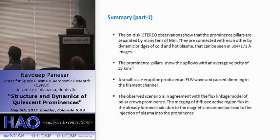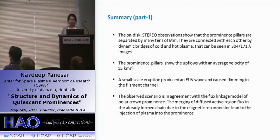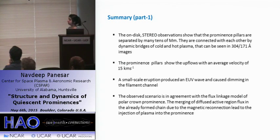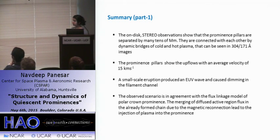Summary of part one: STEREO observations show that prominence pillars are separated by many tens of megameters, connected by dynamic bridges of cold and hot plasma seen in 304-171 ratio images. Prominence pillars show upflows with an average velocity of 15 kilometers per second. These observations are in agreement with the flux linkage model of polar crown prominence.